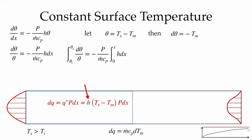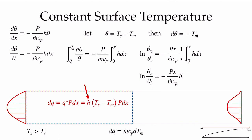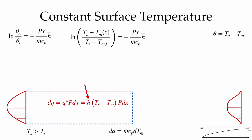Since in fully developed flow the Nusselt number is constant and accordingly h is constant, we can evaluate the integral. Multiplying and dividing by x introduces the definition of the average convection coefficient from the inlet to position x. The result shows an exponential decay in theta — the driving force for heat transfer. Converting back to dimensional temperature terms, we have: ln[(T_s − T_m(x)) / (T_s − T_m,i)] = −(p · h-bar · x) / (m-dot · c_p), giving us T_m(x) directly.